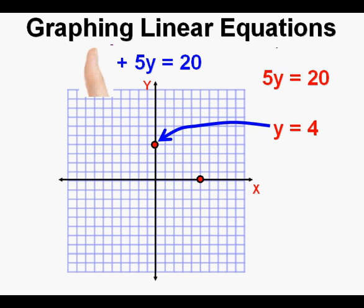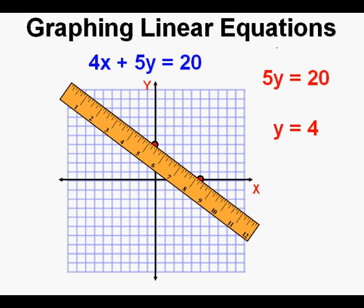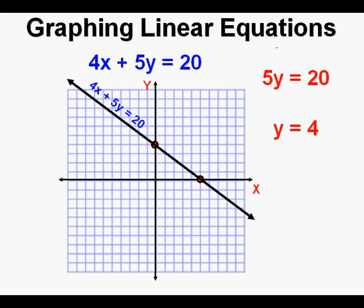Now we're ready to graph the equation by drawing a line through the two points. We line up a ruler or another straight edge to help us draw a reasonably straight line. And with that ruler in place, we can draw a pretty accurate line. This is the graph of the equation 4x plus 5y equals 20.